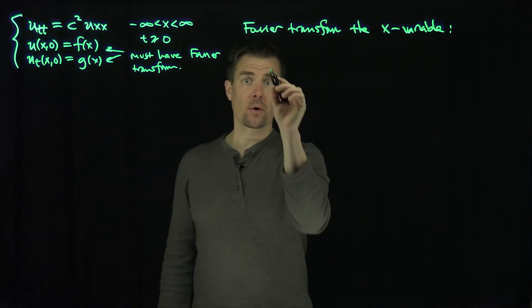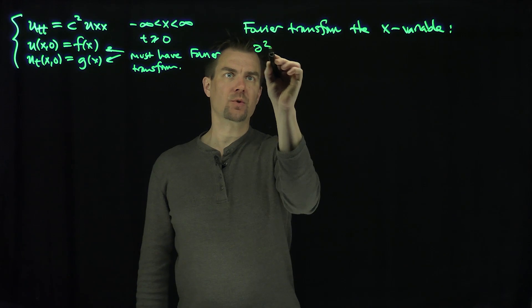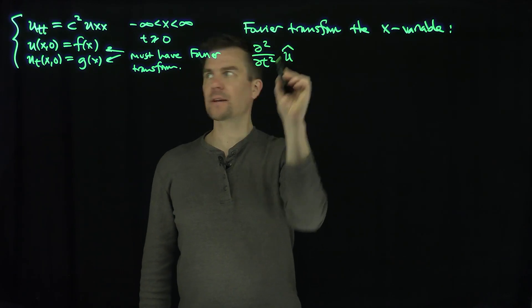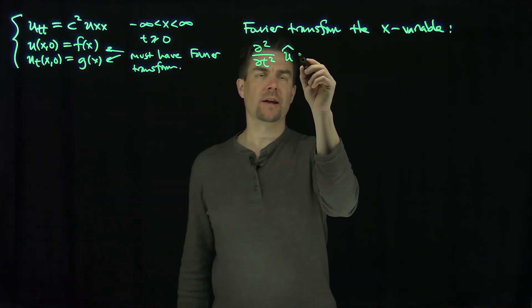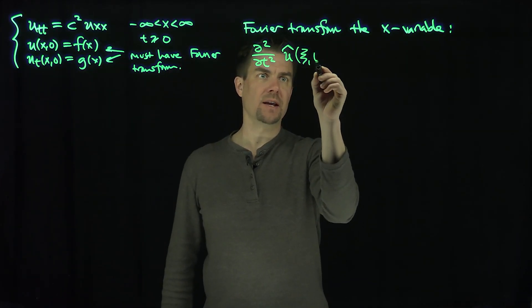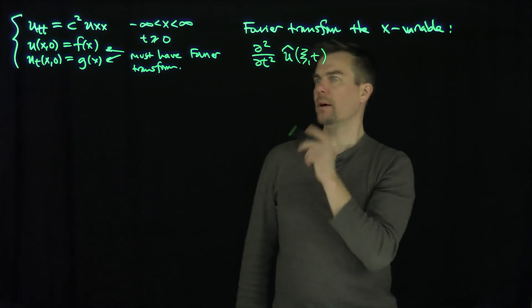When we Fourier transform the x variable, what does our equation become? Our equation becomes partial squared partial t squared U hat, I Fourier transform, and we're going to think of this function as x and t. So then I Fourier transform x, so that becomes xc, t, so I Fourier transform that part over there.